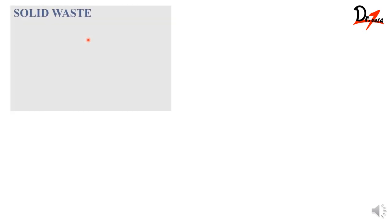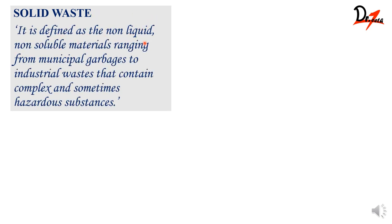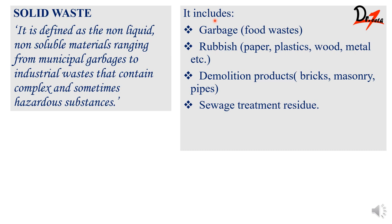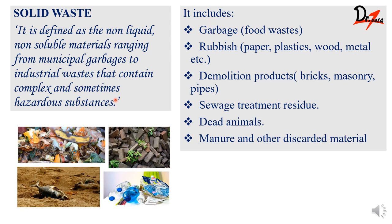Now let's see what we mean by solid waste. Solid waste means these are non-liquid, non-soluble materials and they contain complex and hazardous substances. Solid waste includes garbage such as food wastes, rubbish like plastics, paper, wood, metals, demolition products like bricks and pipes, sewage treatment residues, dead animals, manure, and other discarded materials.